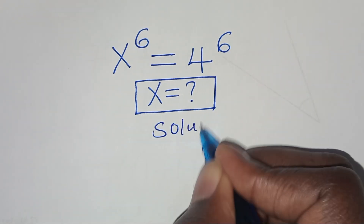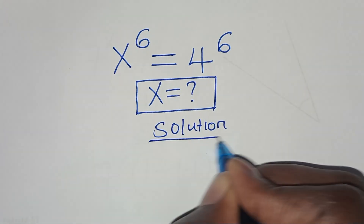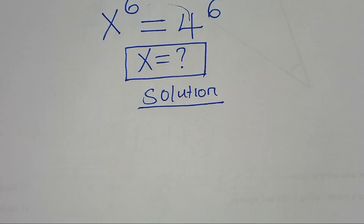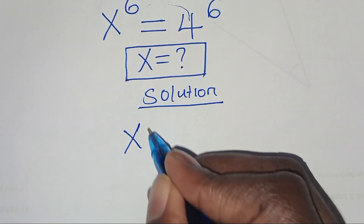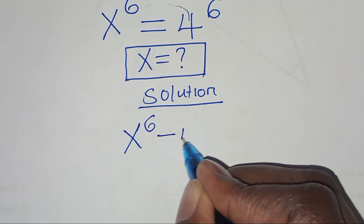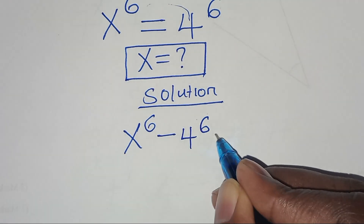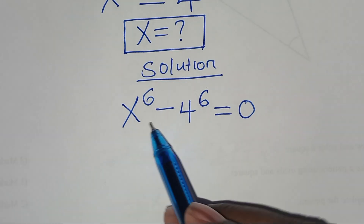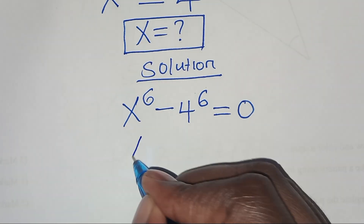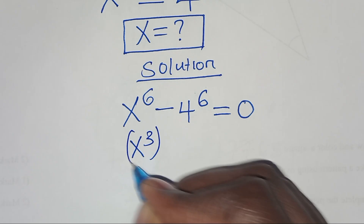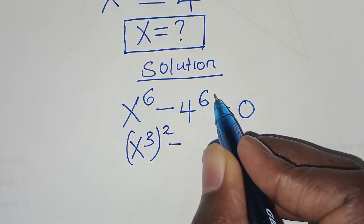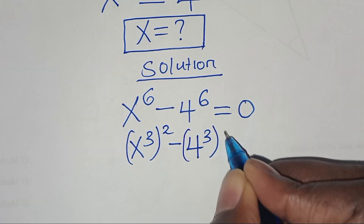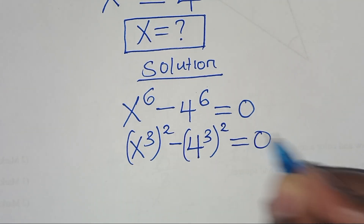The first step is to take 4 to the power 6 on the left hand side, so that we have x to the power 6 subtract 4 to the power 6, this is equal to 0.